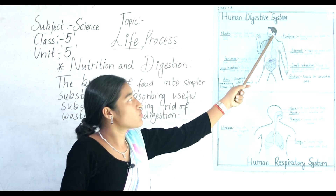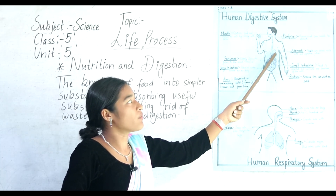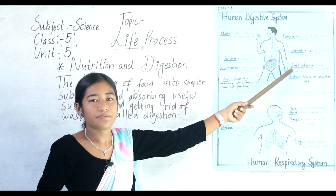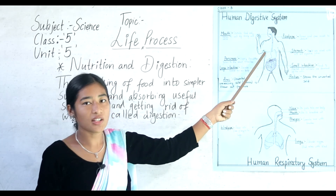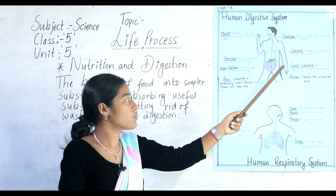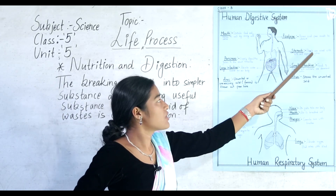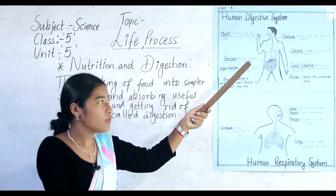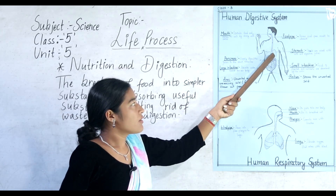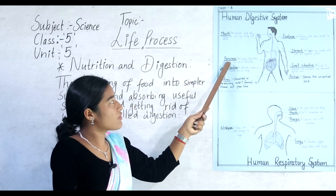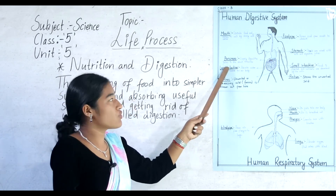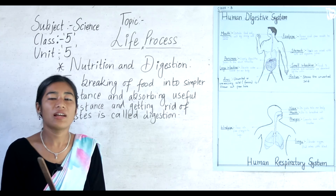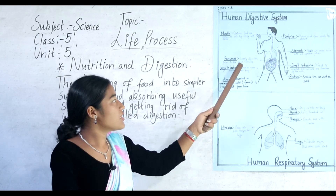The food passes through the food pipe from the mouth to the stomach. In the stomach, food is mixed with acid and digestive juices. Next is the pancreas. Pancreas supplies digestive juices into the small intestine.